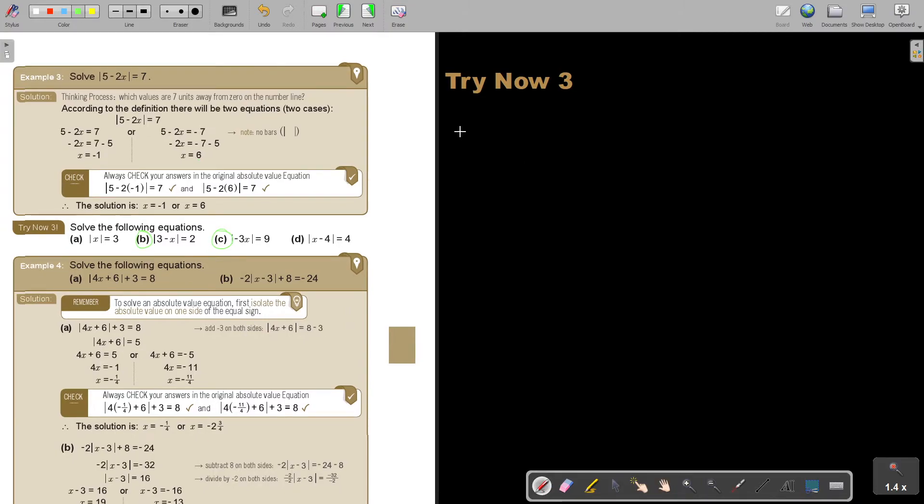Let's start with number B. |3 - X| = 2. Remember there's two options. Therefore, 3 - X = +2 or 3 - X = -2.